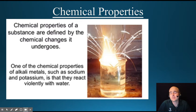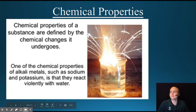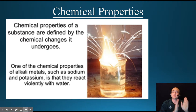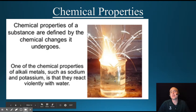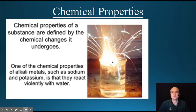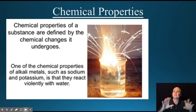Chemical properties are definitely the most interesting to study. Here you can see a chemical property belonging to the group 1 alkali metals — all the ones on the left side of the periodic table. They all react with water quite violently, and this is an example of that kind of reaction. The periodic table of elements was actually grouped together according to chemical properties.